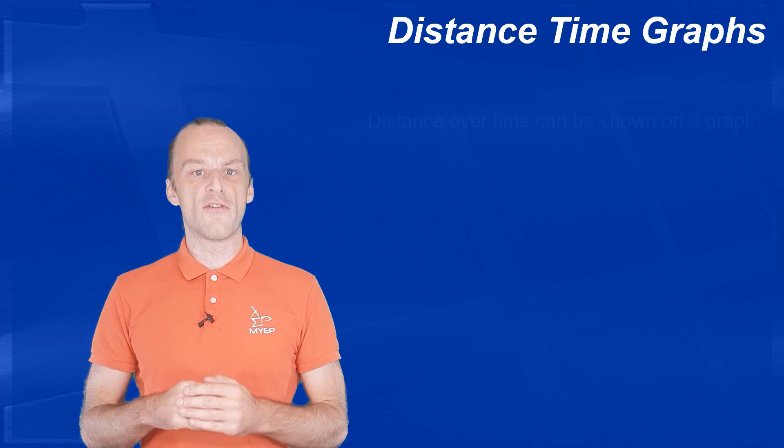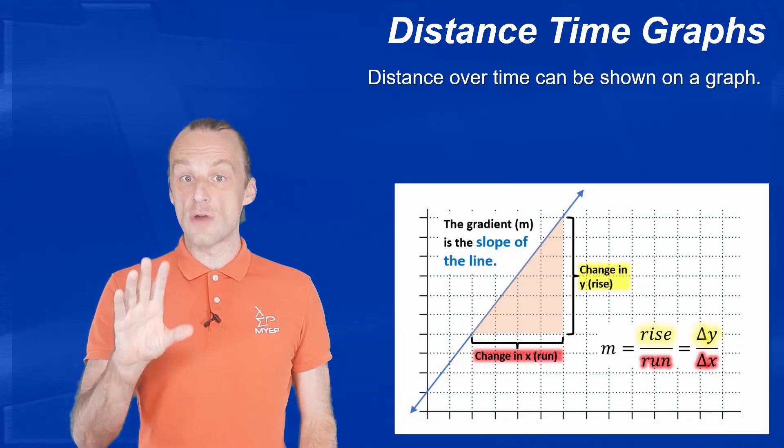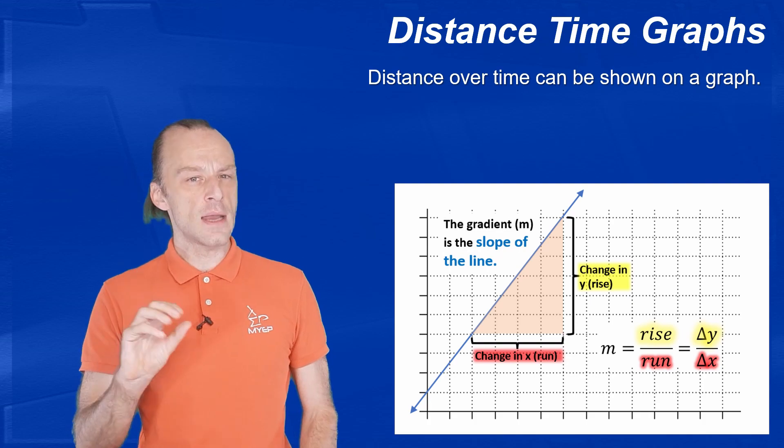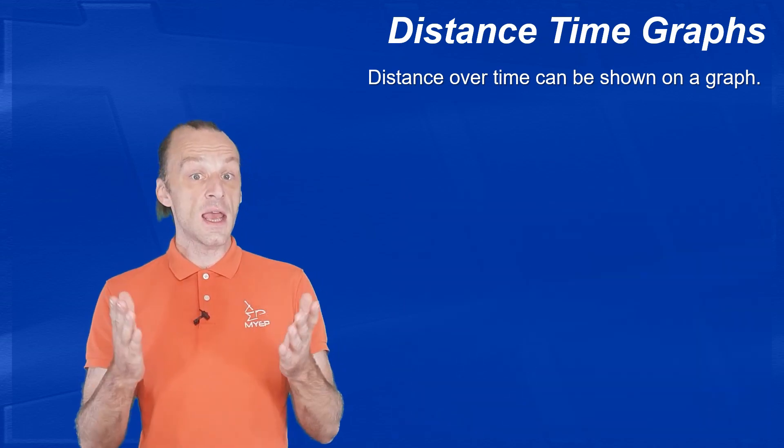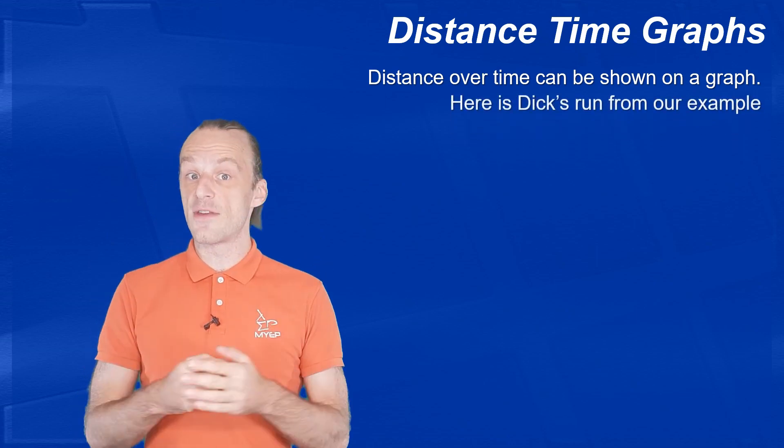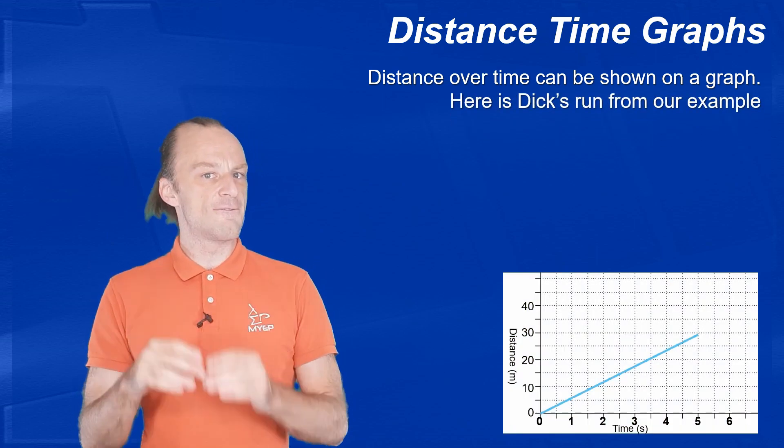We can also plot distance and time on a graph and find the speed that way. This uses the idea of a gradient from maths, and you might need to learn about that first if you don't know it already. Here is Dick's run from our very first example. Remember, he ran 30 meters in 5 seconds.